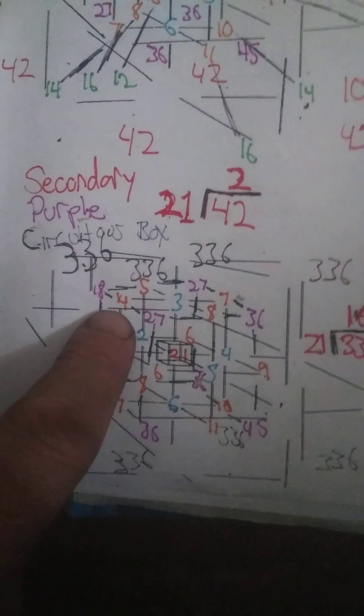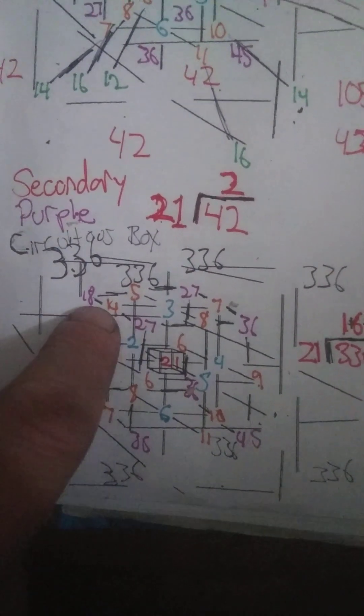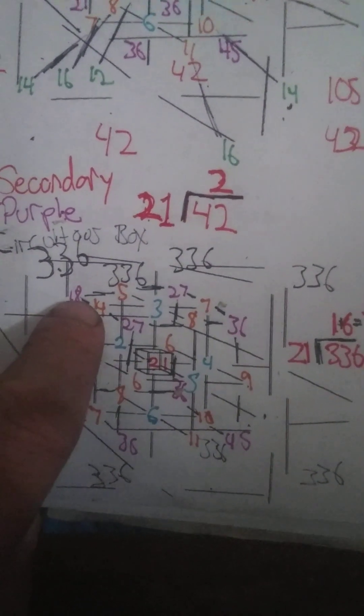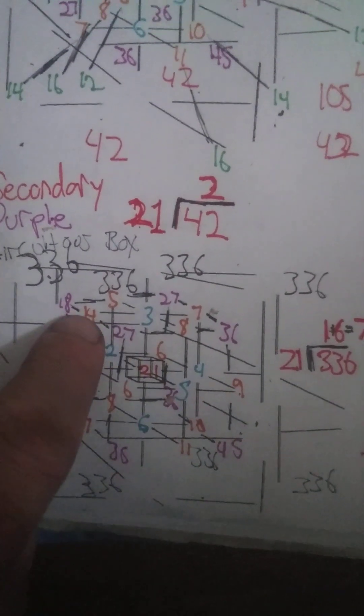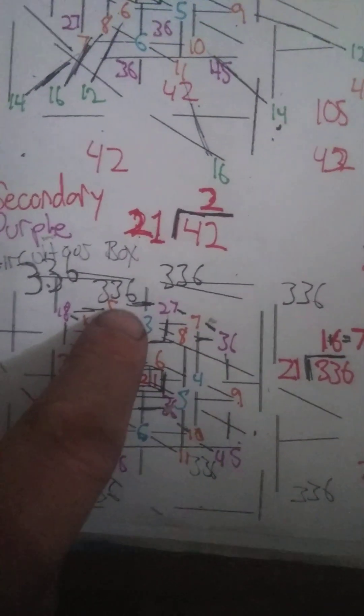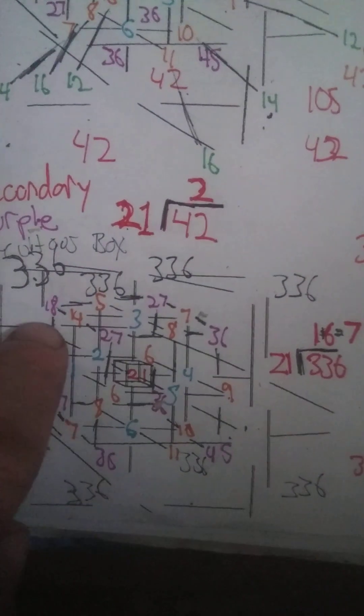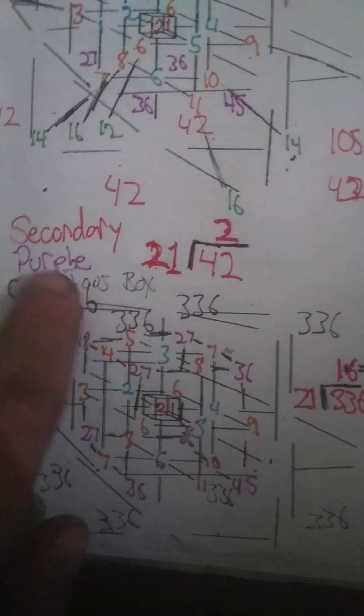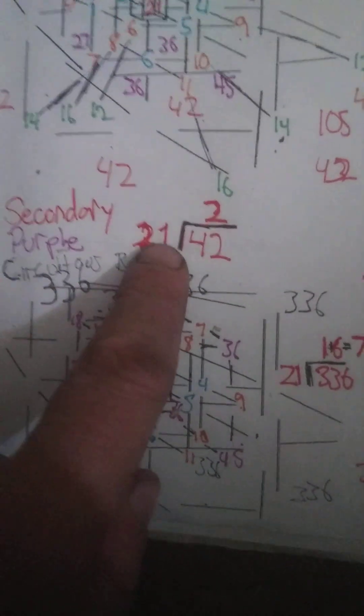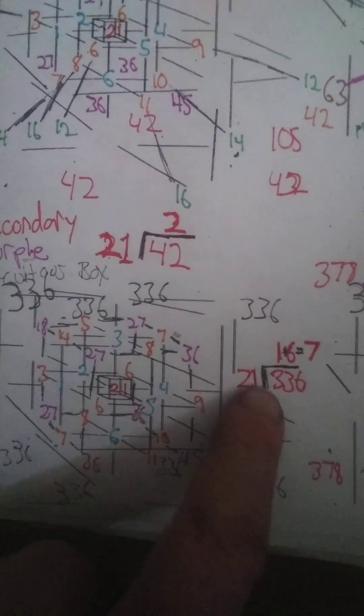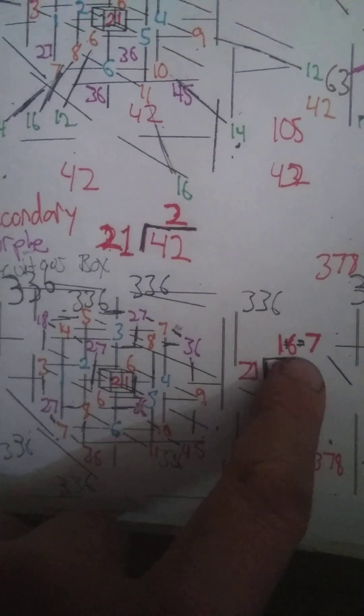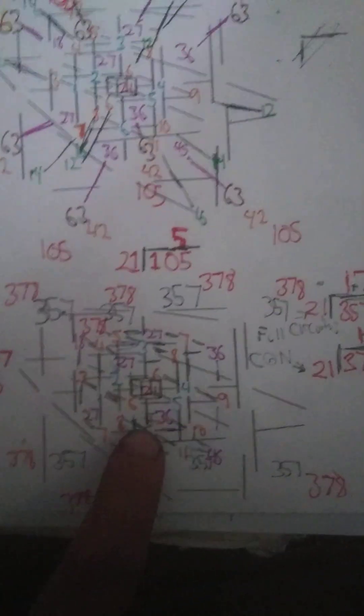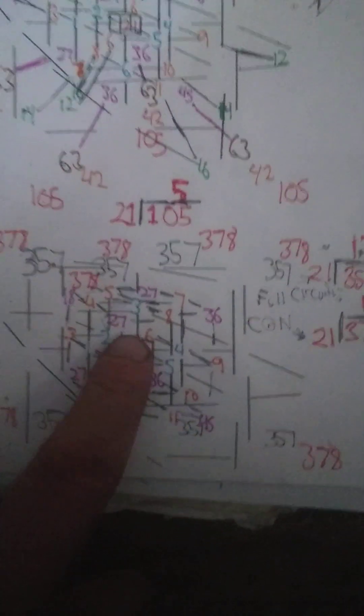So I took the circuitous box, and not only did I include the interlary ghost numbers—the purple ones—I included the ones that are in the middle, so there's not a complete line across. I got 336, secondary purple circuitous box. 21 goes into 336 sixteen times. And then right here I doubled it up.